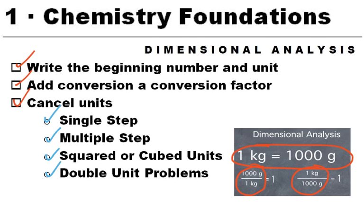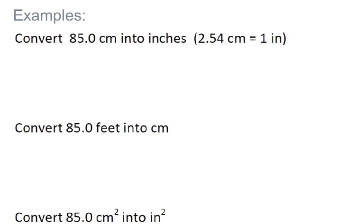A double unit problem is the same idea where we start off with something like miles per hour, so we have to do a conversion to get the miles to change into something and get the hours to change into something. So it's sort of a double problem. We'll try a couple of examples.